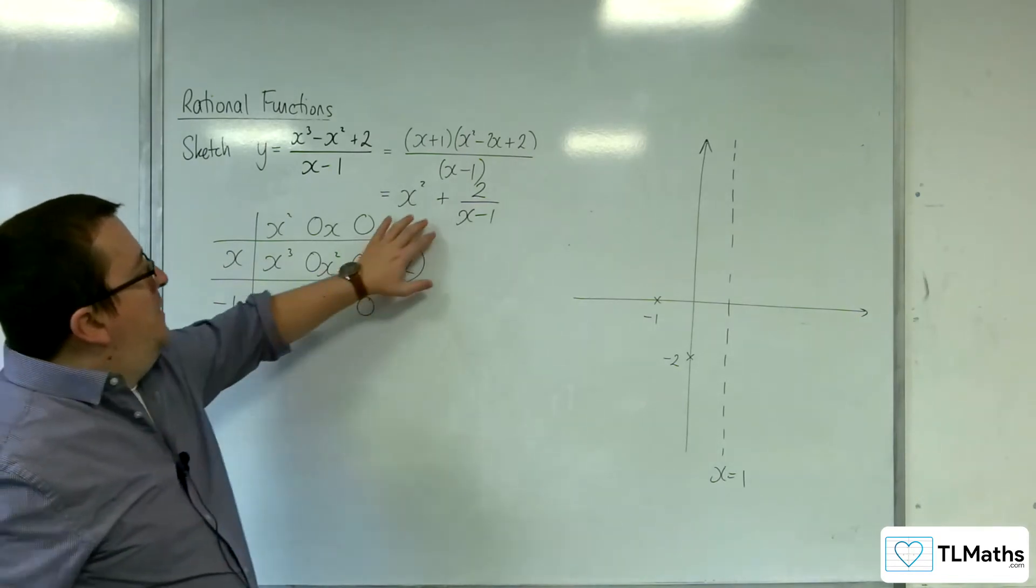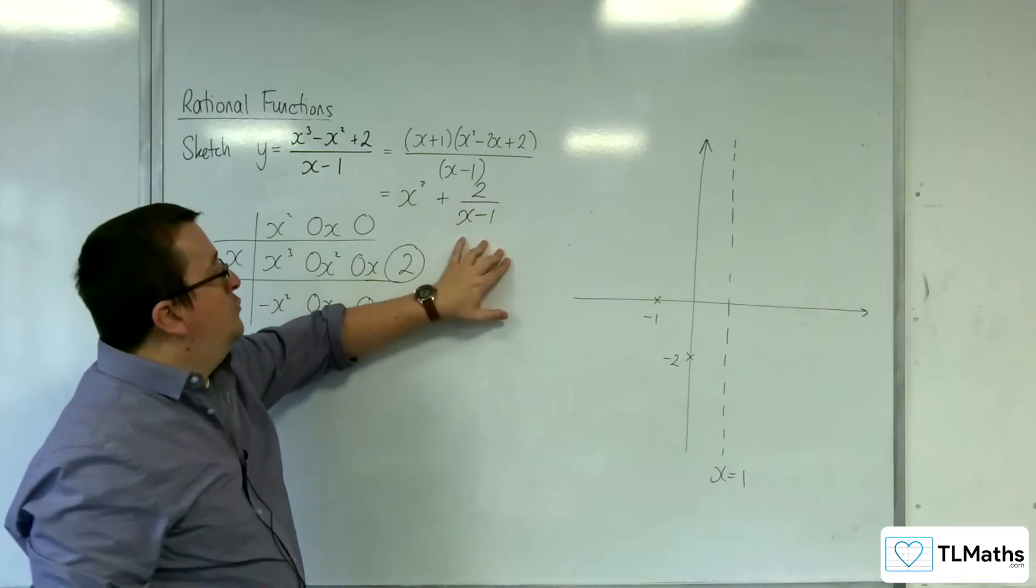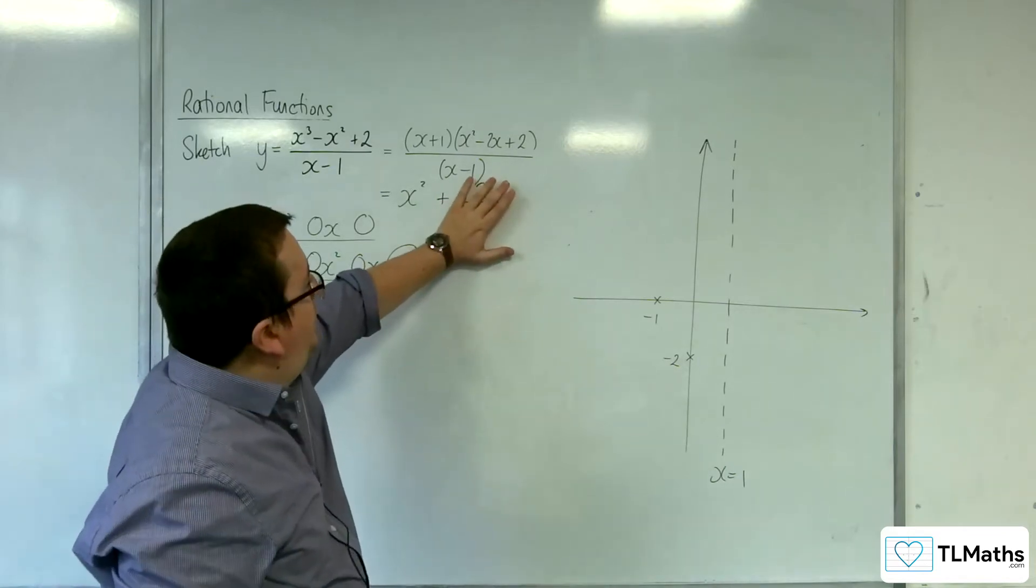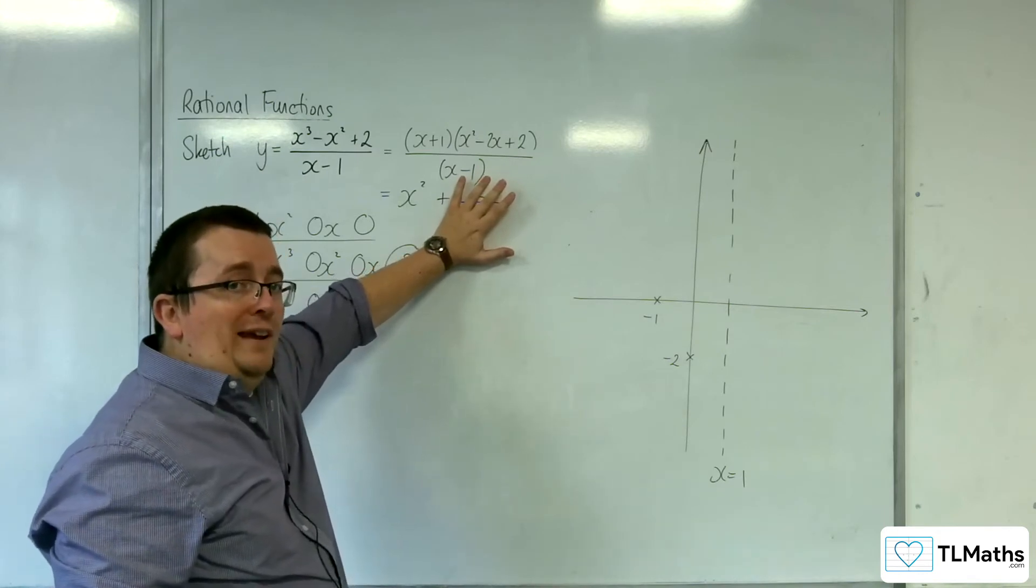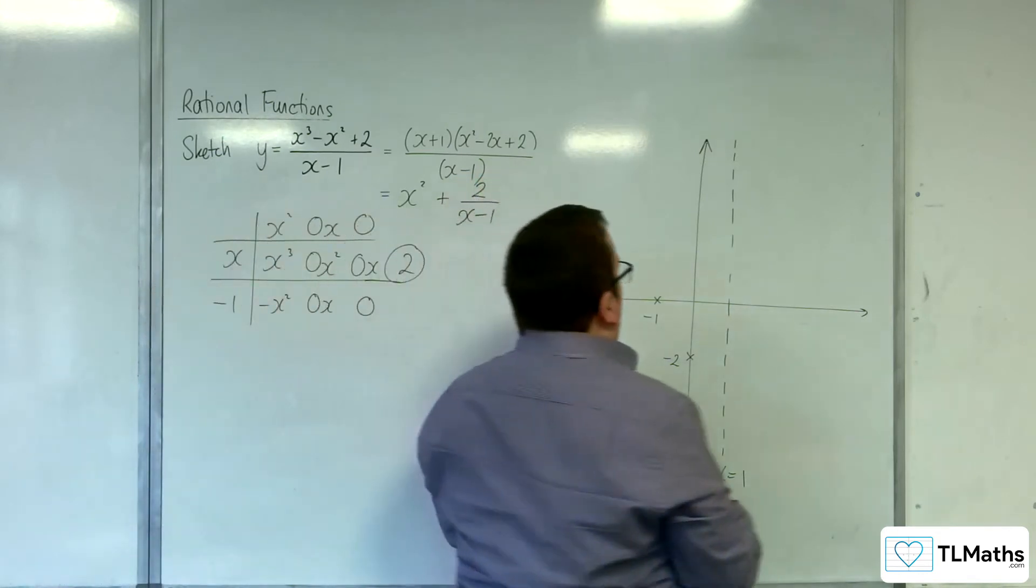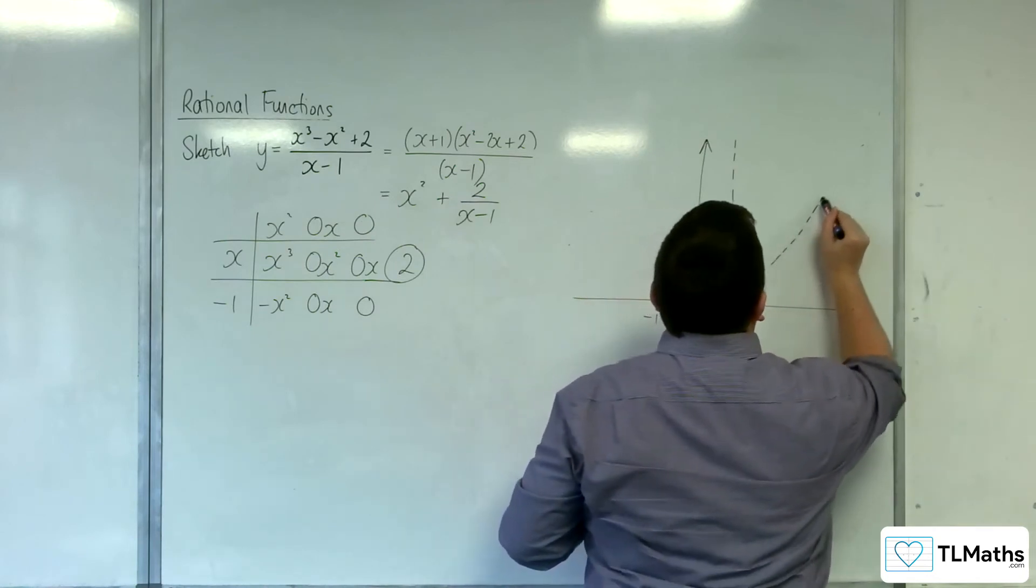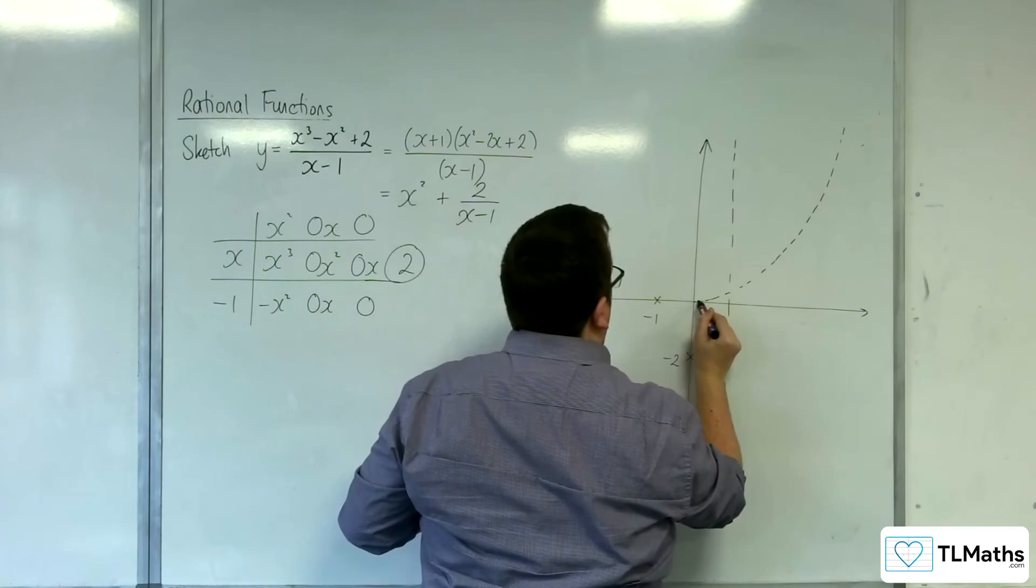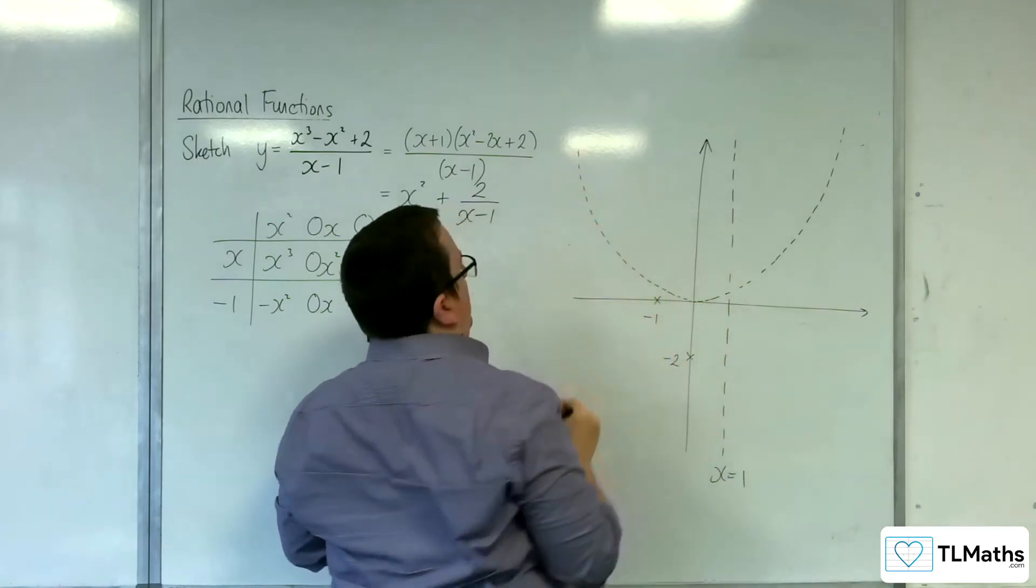So that means that as x gets larger in either positive or negative direction, this fraction goes to 0, and this curve starts to look closer and closer and closer to y equals x squared. So y equals x squared is an asymptote.